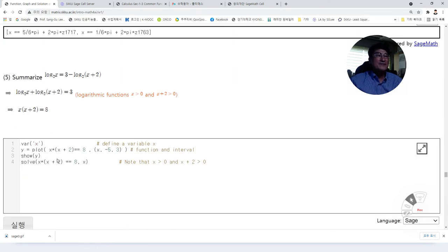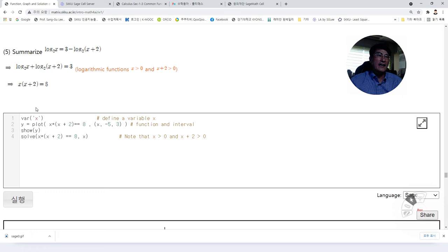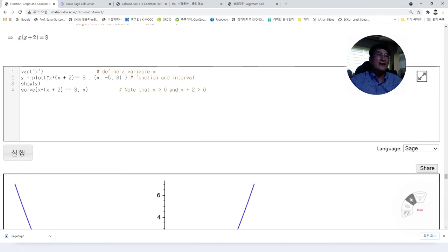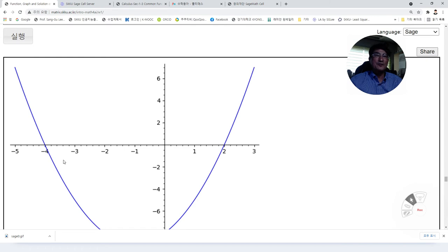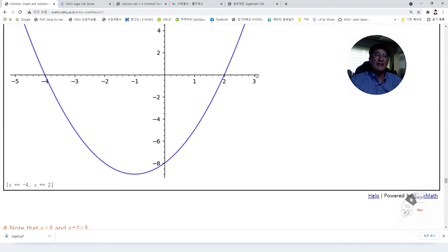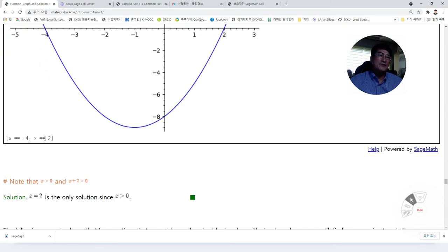For this case, you can simplify it as this. This can be simplified. This is base 2, so 2 to the cube, which is 8, and x times x plus 2 here. Then we can plot this graph. Then we have, we know it has two solutions here and there. If we magnify it, we know it is x equals minus 2 and 2.